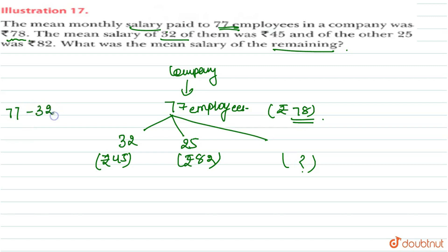That means 32 employees mean is 45. 25 employees mean salary is 82. So, total employees is 77 minus 32 minus 25. So, how much will it be? 77 minus 57, which is 20. So, 20 employees' mean salary find out.